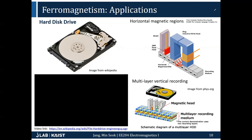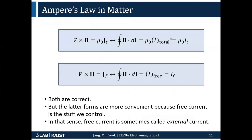We revisit Ampere's law. We know that curl of B = mu_0 * J, where J is the total current density. Similarly, we can write curl of H = J_f, where J_f is the free current density. Both forms are equally correct, but the later form using H and free current is more convenient, because what we can control is the free current — we cannot control the material's response to it.